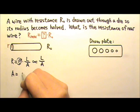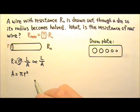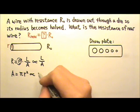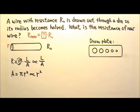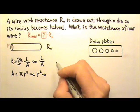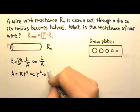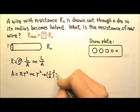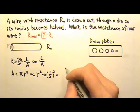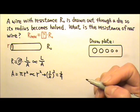The cross-sectional area of the wire is pi R squared. And this means the cross-sectional area is proportional to R squared. The radius becomes halved, and we have to square it. So the cross-sectional area changes by a factor of one-fourth.